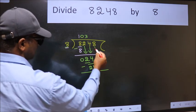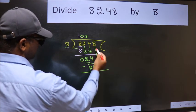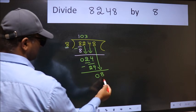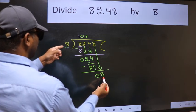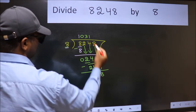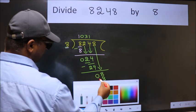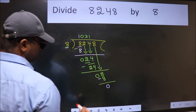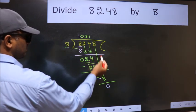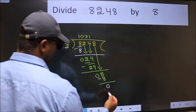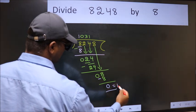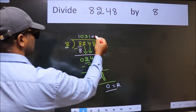After this, bring down the beside number. So 8 down. When do we get 8 in the 8 table? 8 times 1 is 8. Now we subtract. We get zero. No more numbers to bring down, so we stop here. This is our remainder and this is our quotient.